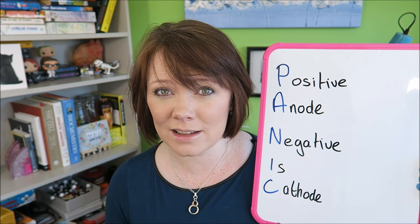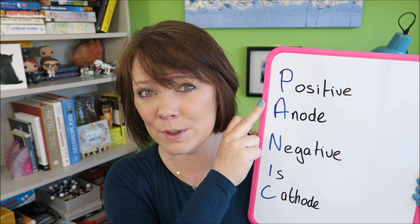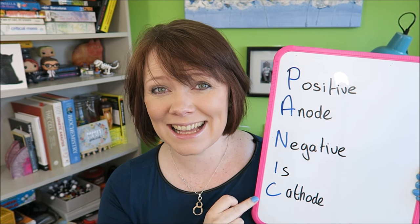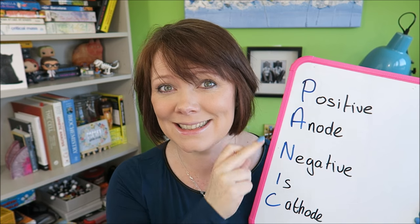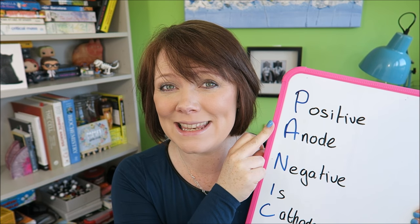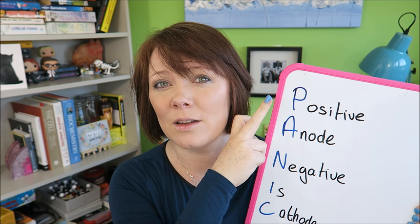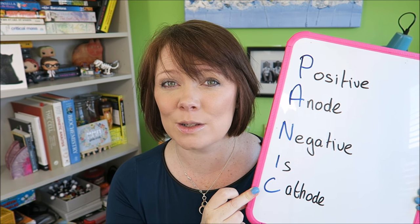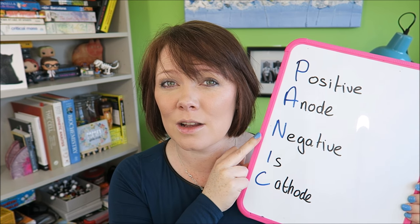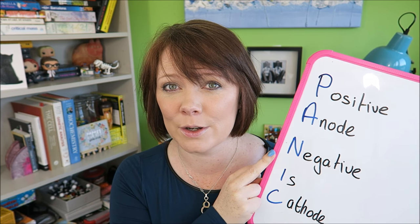Now, when we come to ions, it is the other way round. I know, it's horrible. Anions go to the anode, cations go to the cathode, which means that anions are going to be negative, because they are going to the positive electrode, and cations are going to be positive, because they are going to the negative electrode, okay?